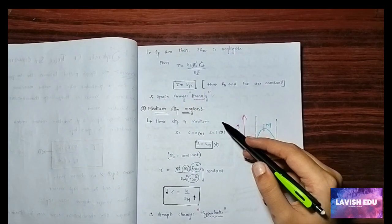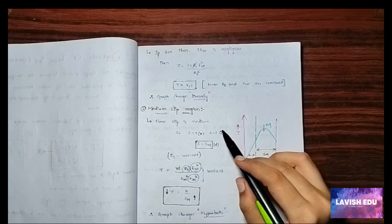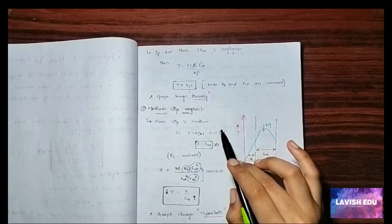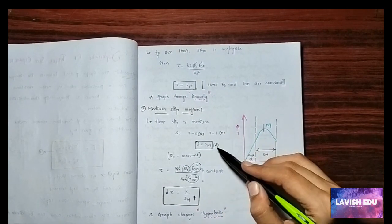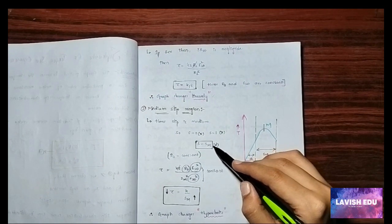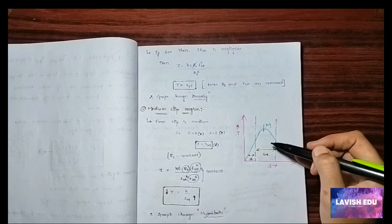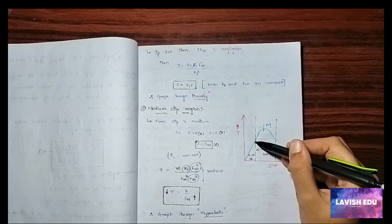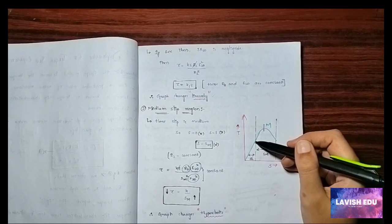Now what is this medium slip region? It is not overall s equals to zero, it is not overall s equals to one, it is a medium s equals to sm region. Here the graph, here you have up to this linear one, and here the curvature part is called the sm which is a medium part.